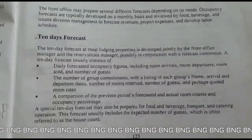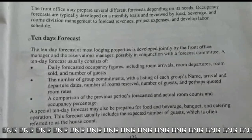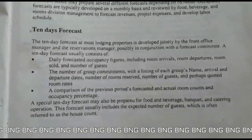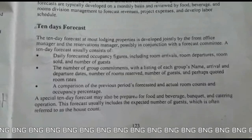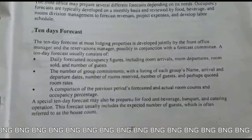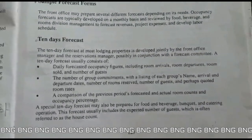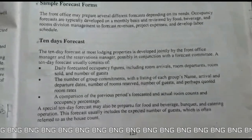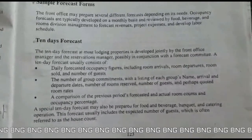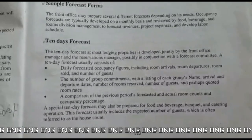The forecast committee may also include the F&B manager and the housekeeping manager. A 10-day forecast usually consists of daily forecast occupancy figures including room arrivals, room departures, rooms sold, and number of guests. The second point is the number of group committees with a listing of each group's name, arrival and departure dates. Maybe 2-3 months prior, we get information for any group arrival, so the reservations team makes a note and passes the information to the front office manager and other department heads.